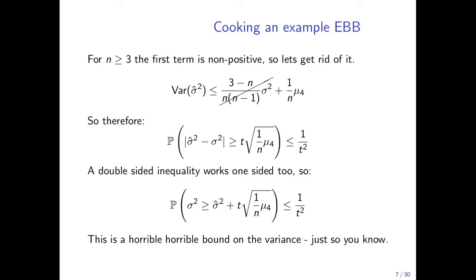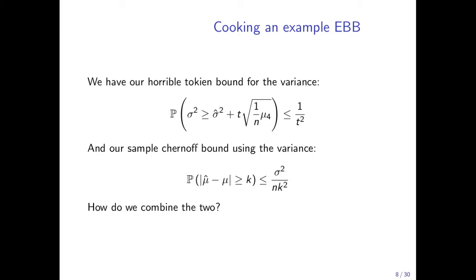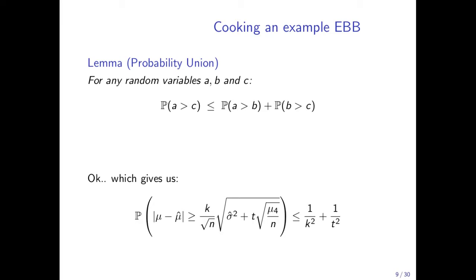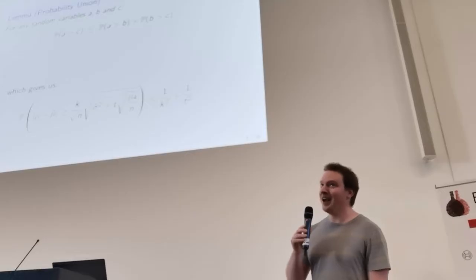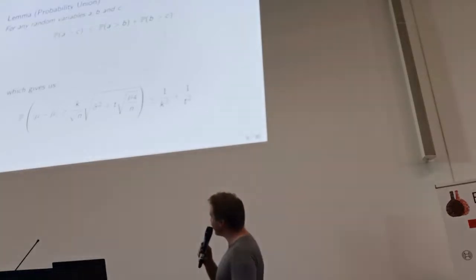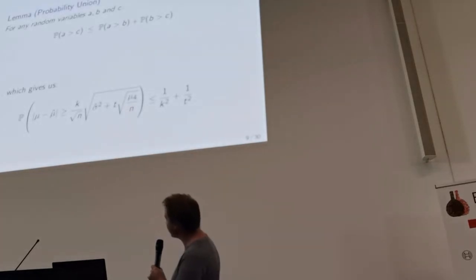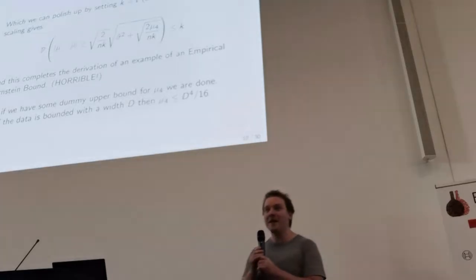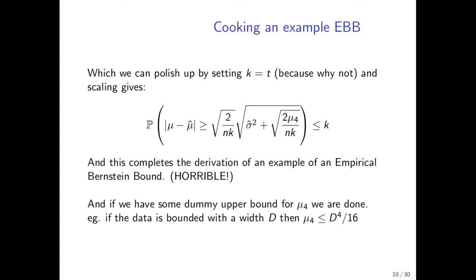We've got a bound for the variance, and we've got a bound for the sample mean. To put those two together, we're going to use a special relation called the probability union bound, which is weak — incredibly weak. For any random variables a, b, and c, the probability that a is greater than c is less than the probability a is greater than b plus b is greater than c. That gives us the relation where we've got k in terms of the first equation and t in terms of the second, and we just set k equals t — it might not be optimal, but that'll do. And this is a probability bound for your mean that is parameterized in terms of your sample variance and the fourth central moment. If your order is bounded, you've got a natural upper bound at the fourth central moment which you can use, and this is an example of an empirical Bernstein bound.